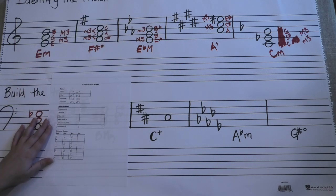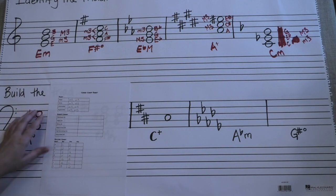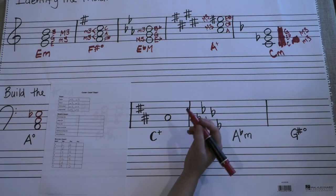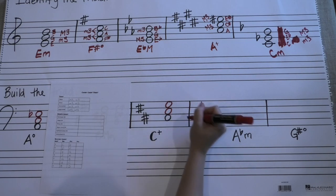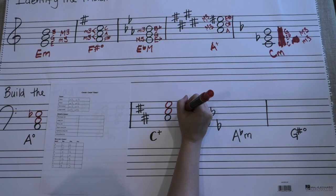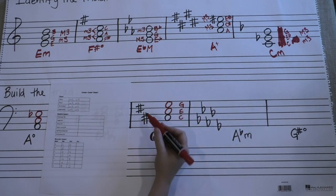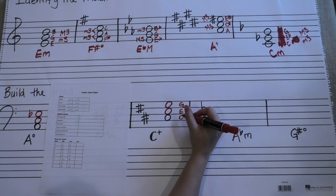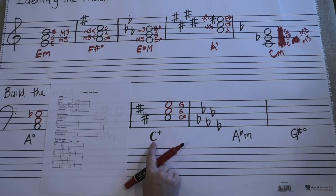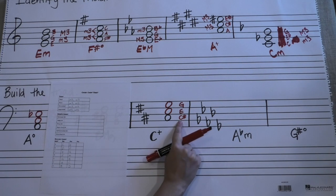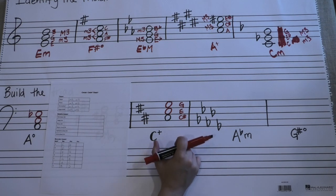This time we're looking for an augmented chord. An augmented chord has two major thirds stacked on top of each other. Let's get the snowman going here and see what we got. We have C, E, G. It looks like our key signature affects our C, C sharp. This is what we have. Now, this asks for a C augmented chord, not a C sharp.